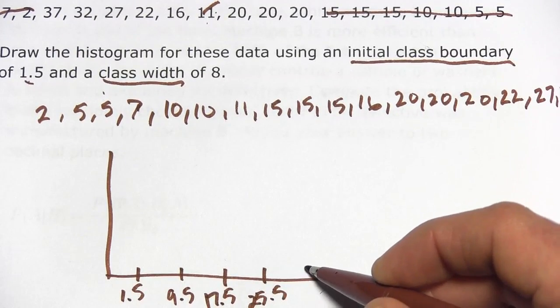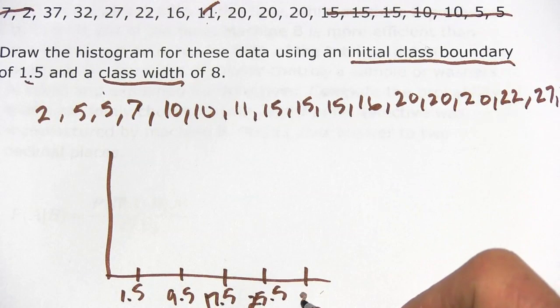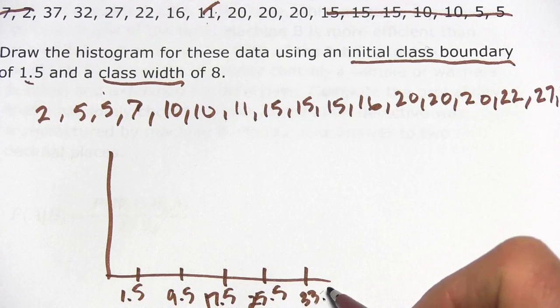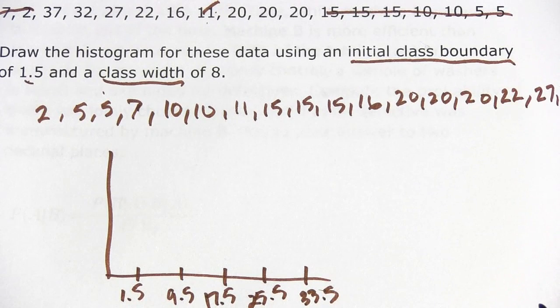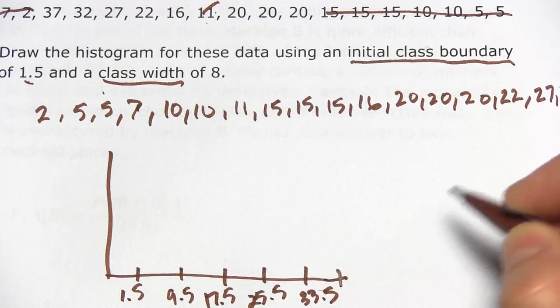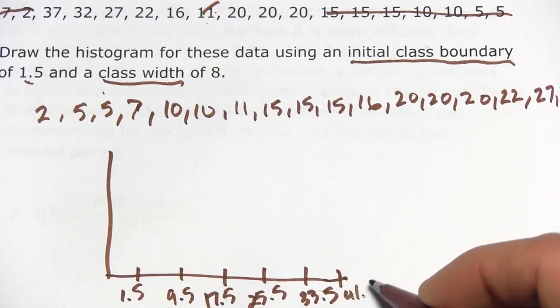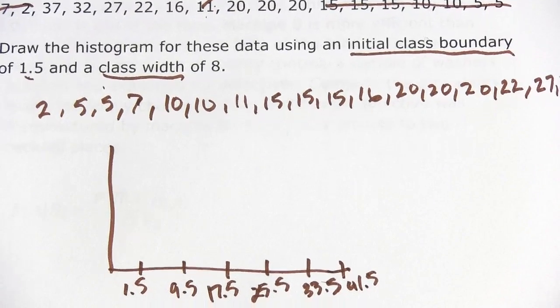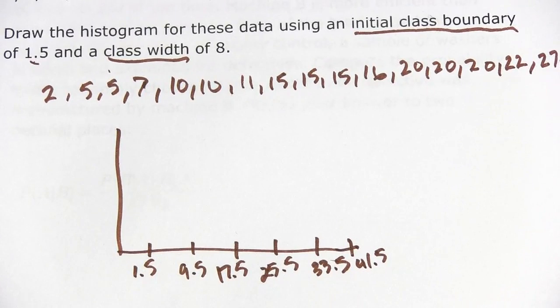And 8 more would bring us to 33.5. And I think that's as big as the biggest number so we can, oh, it's not, sorry, we have 37, don't we? So 8 more would be 41.5. Okay, so there are our classes.